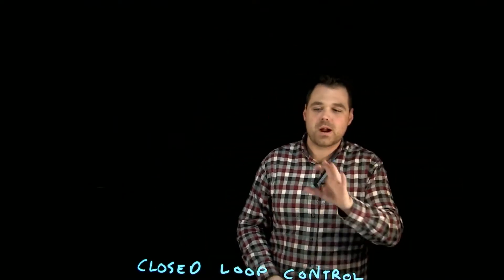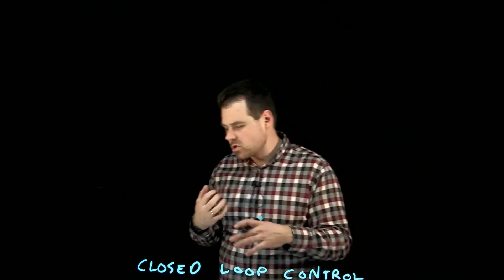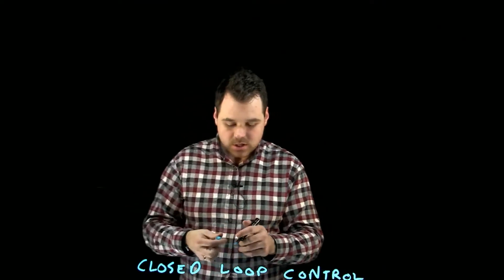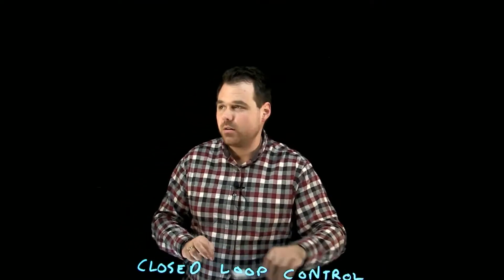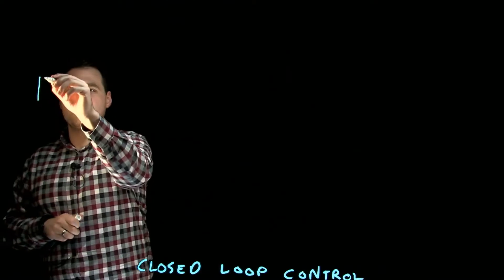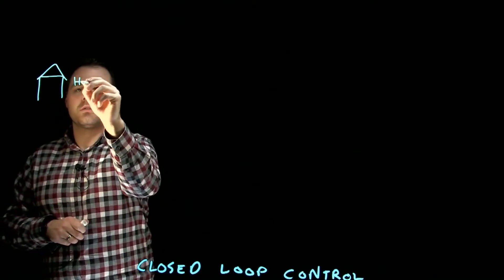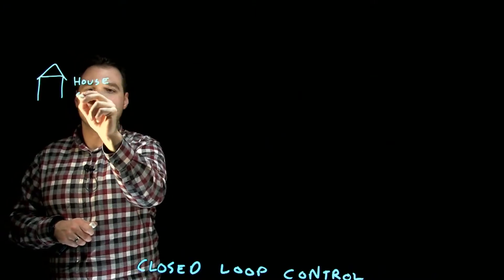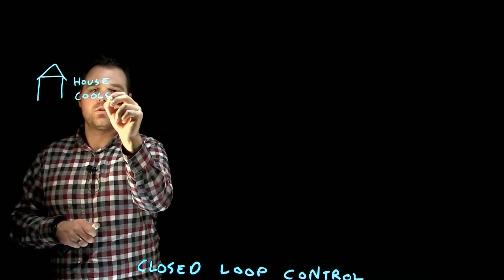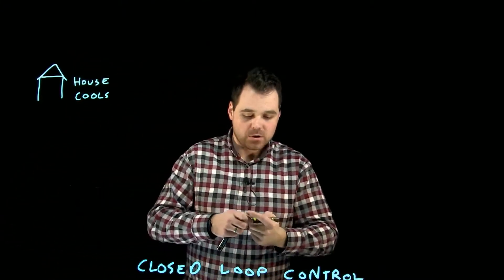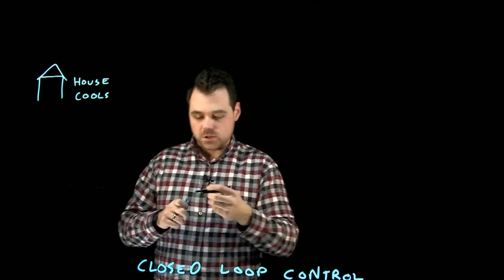What I mean by closed loop control is that wherever it starts ends up back there. We're going to do a full loop, a full circle back to where we begin. Where it starts is we could say that our house cools down.